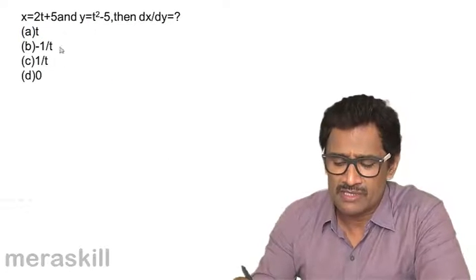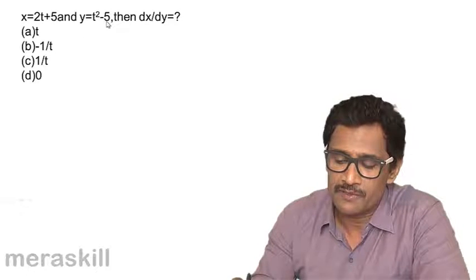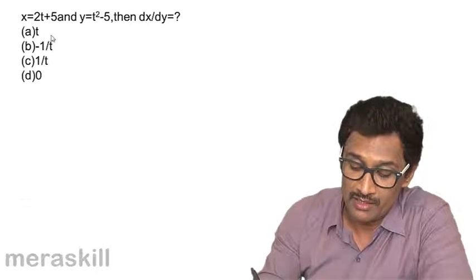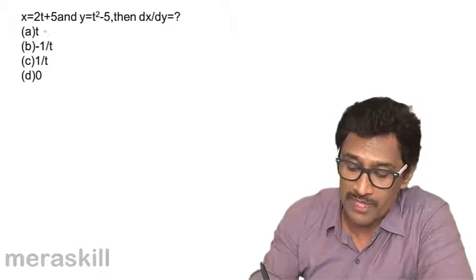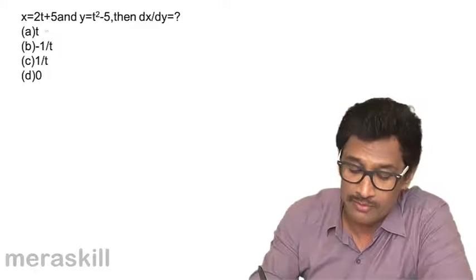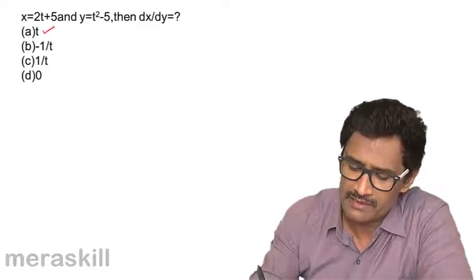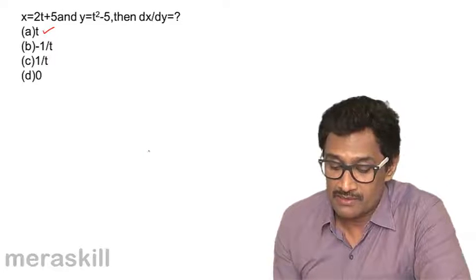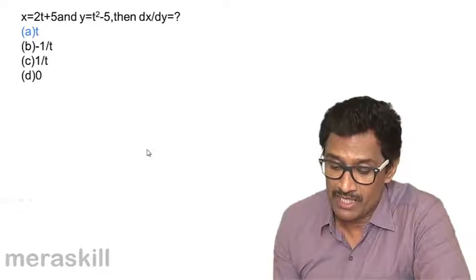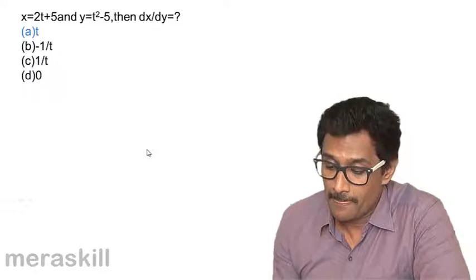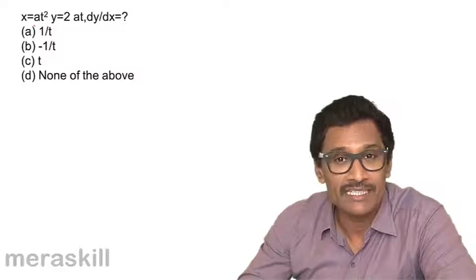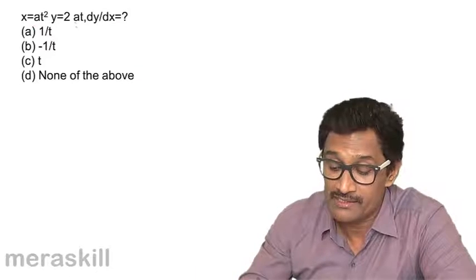This is quite similar — the only difference is you have a constant 5 here. You should practice this; you get the same result, that is t. Now the next example: x = at², y = 2at.